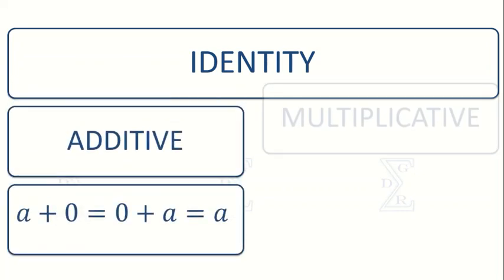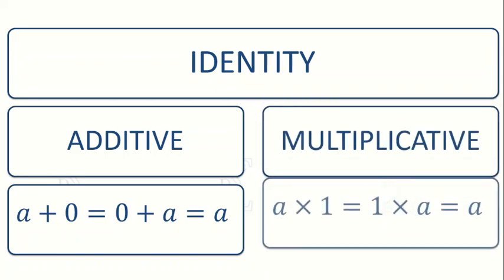The additive identity of a number is 0, and the multiplicative identity of a number is 1.